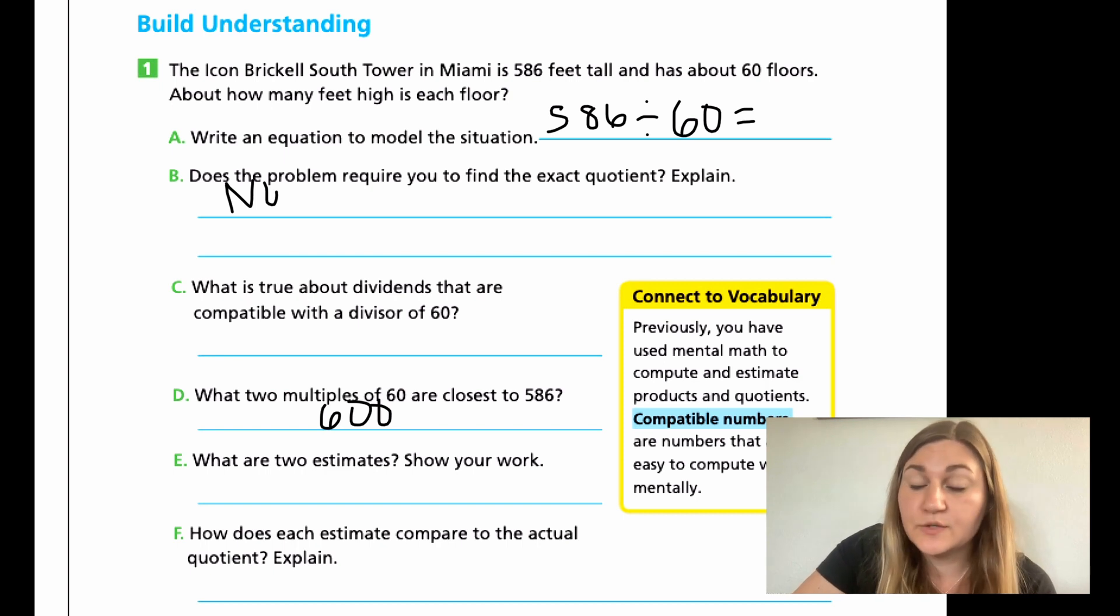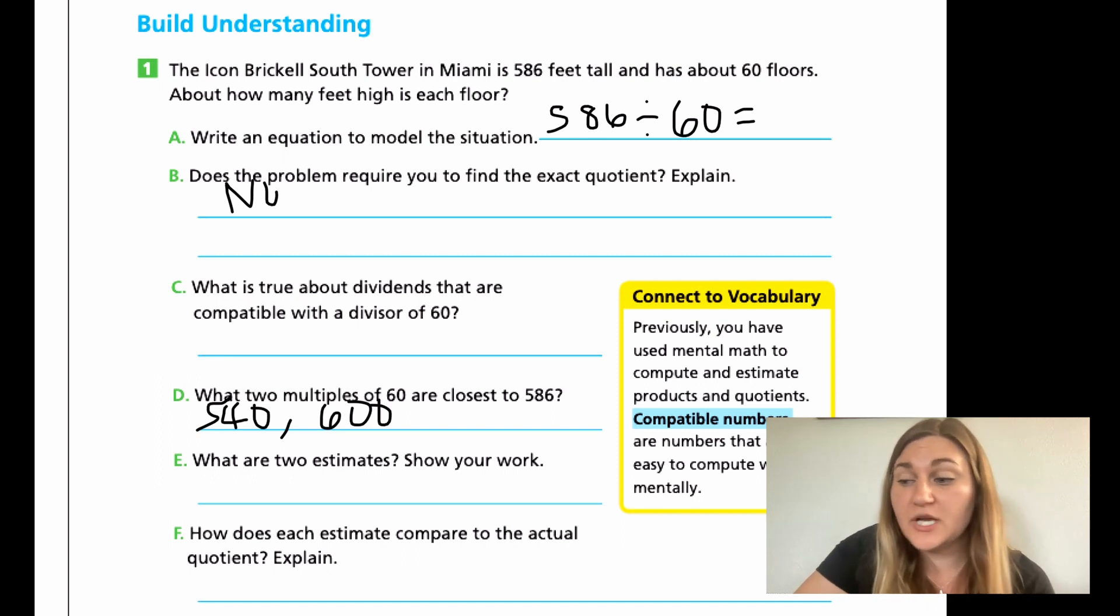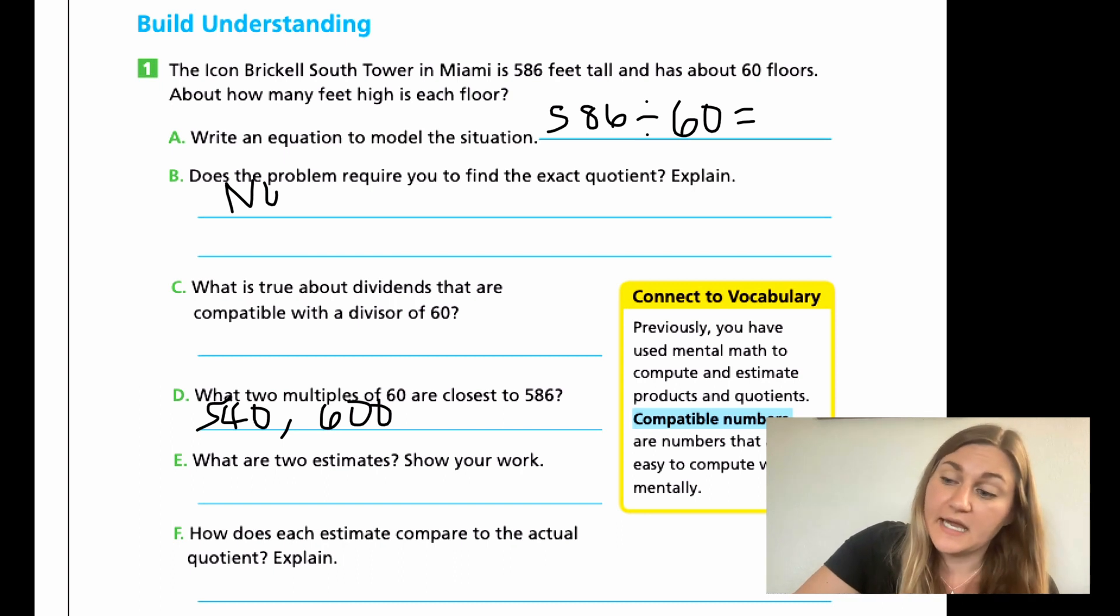Now, I know in my head I can do 6 times 9, which is 54. And just tag on that 0. So my two multiples of 60 that are closest on each end of 586 is 540 when I'm multiplying by 9, and 600 when I'm multiplying by 10. And what are the two estimates? That would be your 9 and your 10.